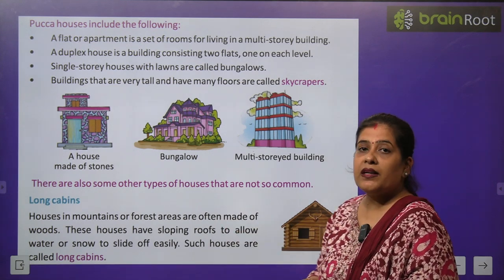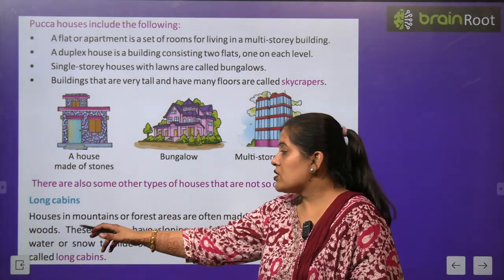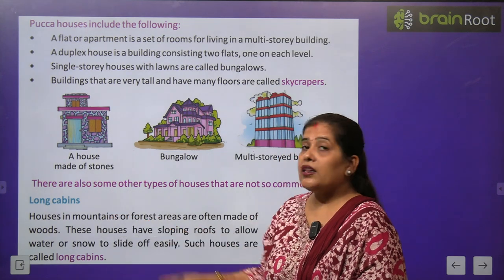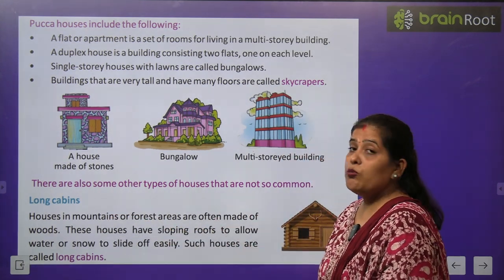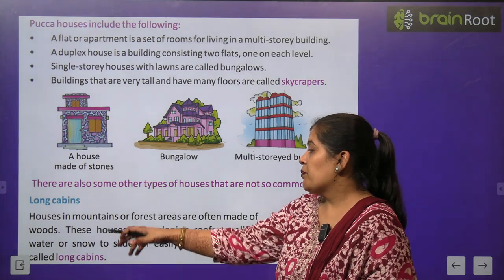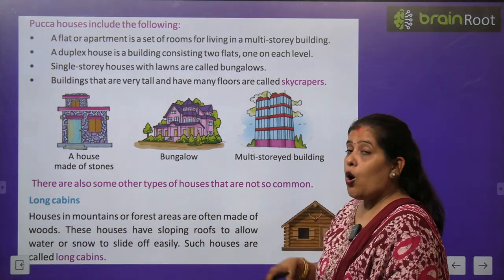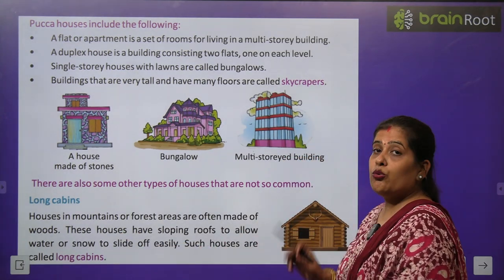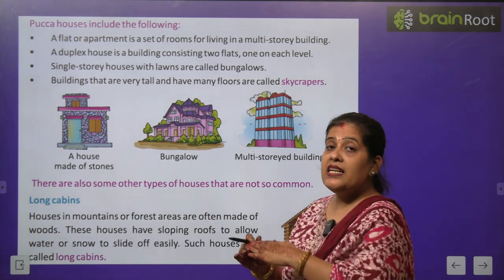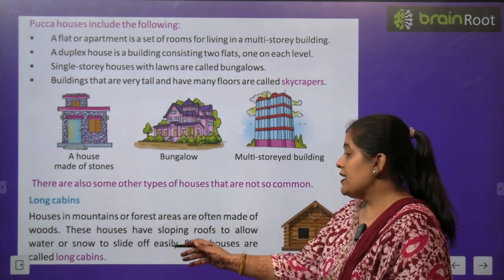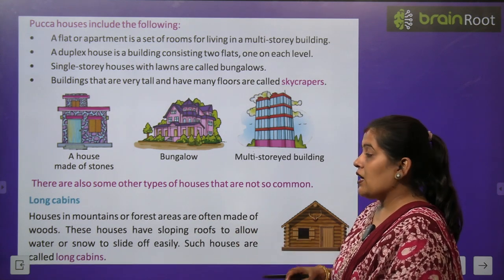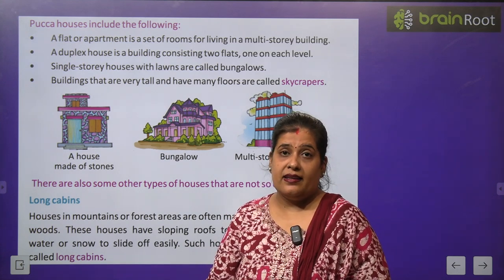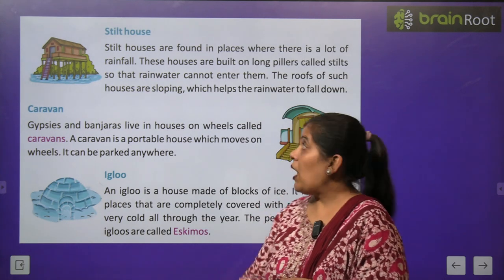There are also some other types of houses that are not so common. Log cabins: houses in mountain or forest areas are often made of wood. पहाड़ी इलाकों और जंगलों में जो घर होते हैं वो लकड़ी के बनते हैं. These houses have sloping roofs to allow water or snow to slide off easily. इन मकानों की छतें sloping होती हैं जिससे पानी और snow easily नीचे गिर जाए. Such houses are called log cabins.